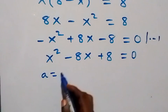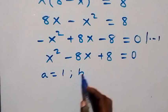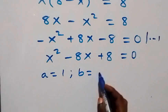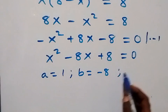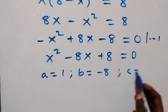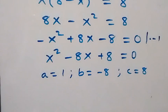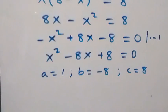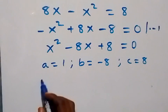From here we solve this quadratic equation. We identify a equals 1, b equals minus 8, and c equals 8. We then apply the quadratic formula.